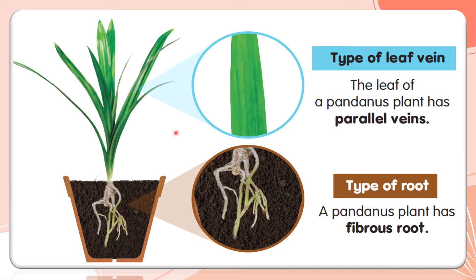This is a picture of a pandanus plant. Let us look at the type of leaf vein and the type of root. The leaf of a pandanus plant has parallel veins. The pandanus plant has fibrous roots.